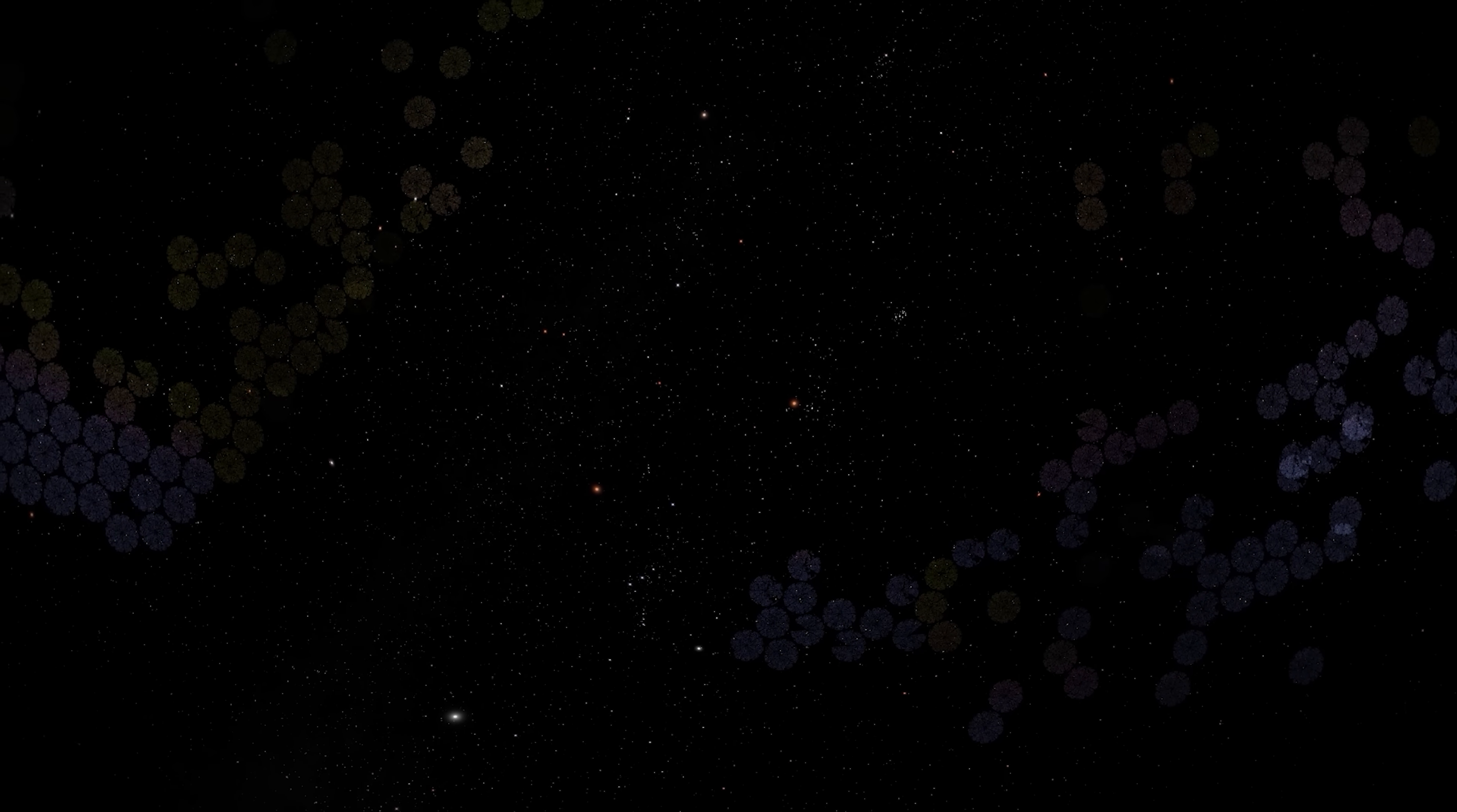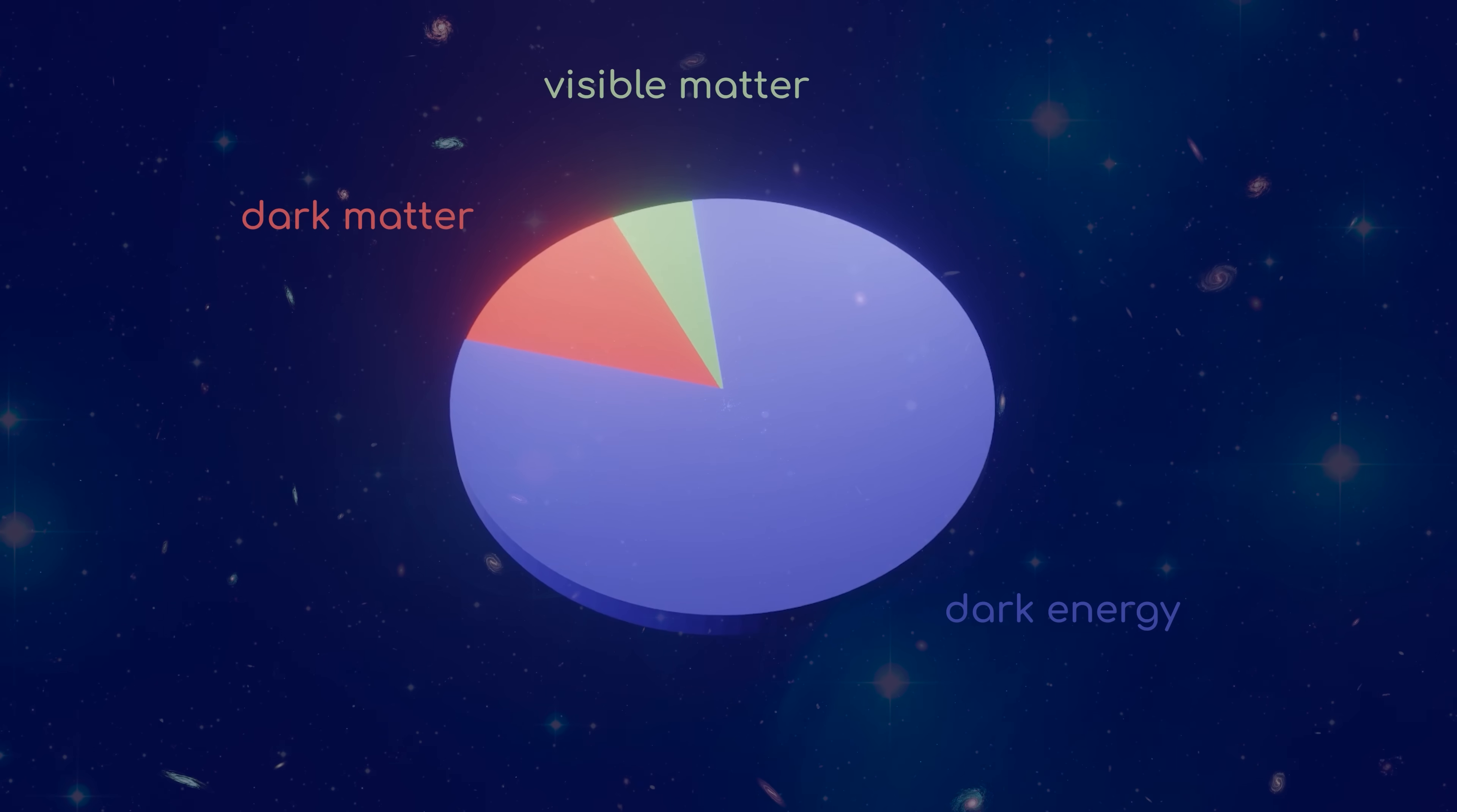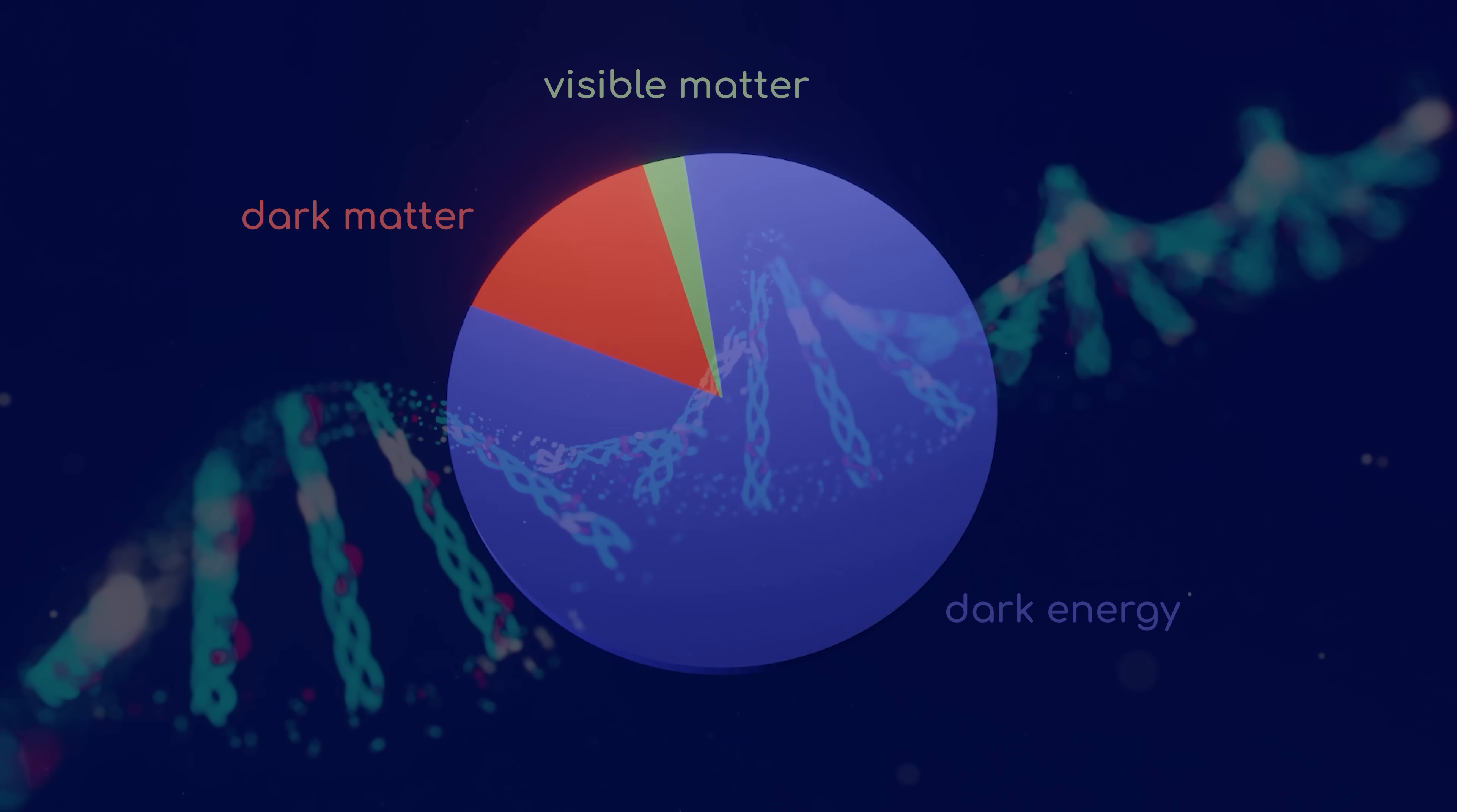Decades before astronomers even had any observational evidence for the existence of dark energy, physicists were shocked to see that the most successful theories of the 20th century predicted a level of dark energy so high that stars and galaxies could never have come to exist, let alone life and humans.